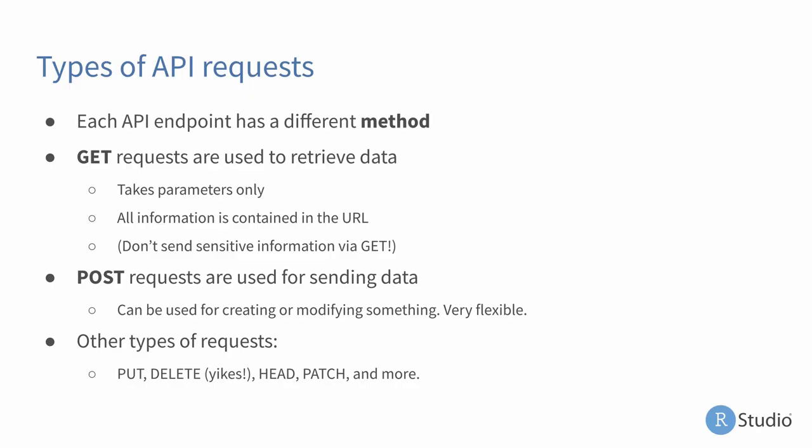The types of API requests: in general, each API endpoint has a different method of request, a different type of request that you can make. The two most common are gonna be get requests and post requests. A get request is used to retrieve data — it only takes parameters, meaning all information you send in a get request is contained in the URL. It's important to note that get requests are limited by the maximum length of a URL string; a URL can't be 15,000 characters long. Also, since every bit of information you're sending is contained within that URL, you really shouldn't send sensitive data via get.